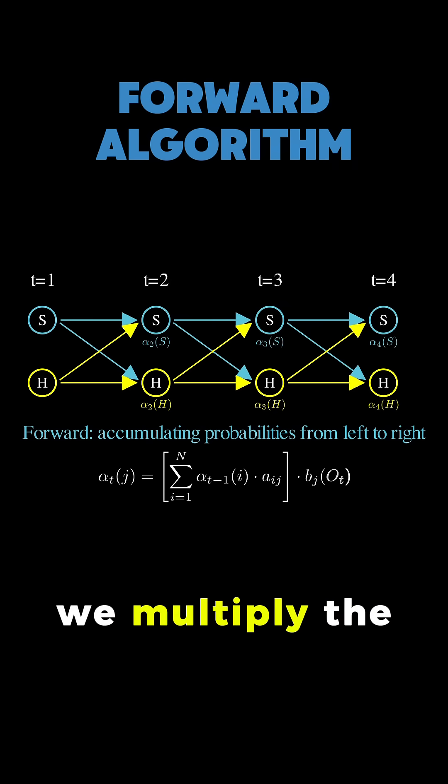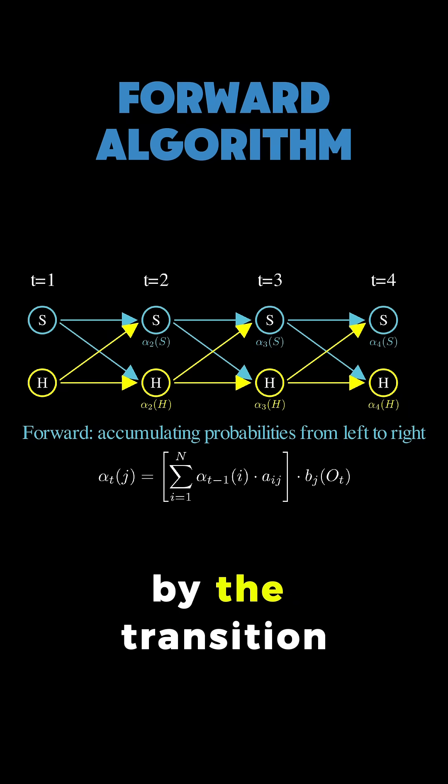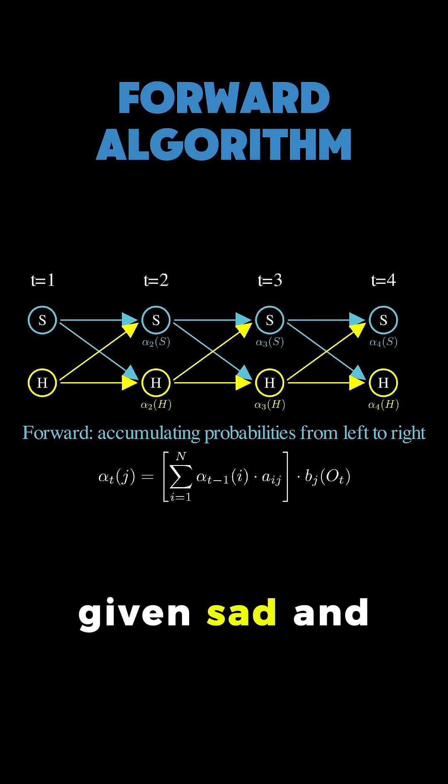And for each path, we multiply the previous alpha value by the transition probability and the emission probability of seeing red given sad, and then we add all these parts together.